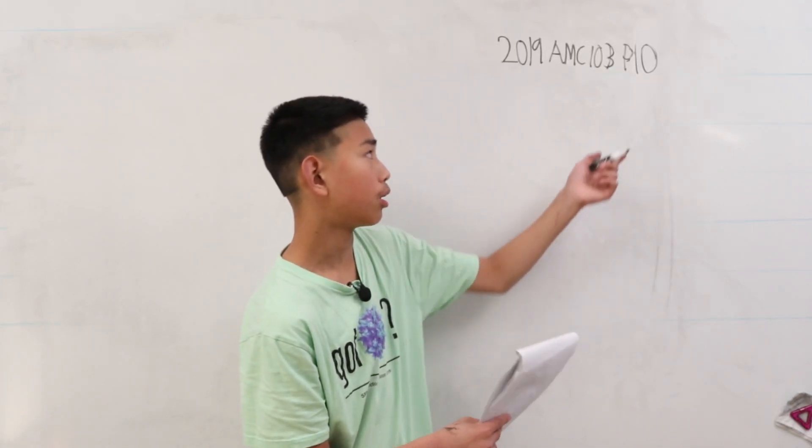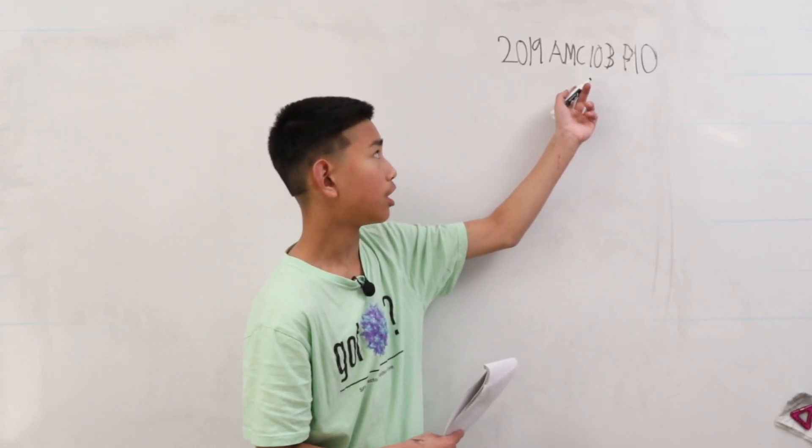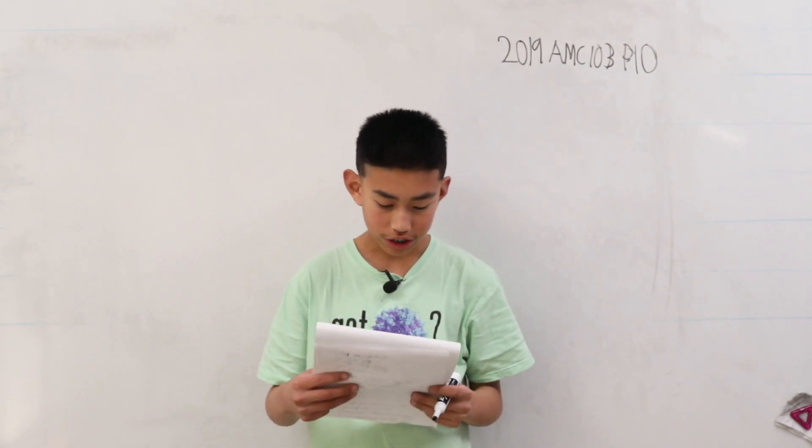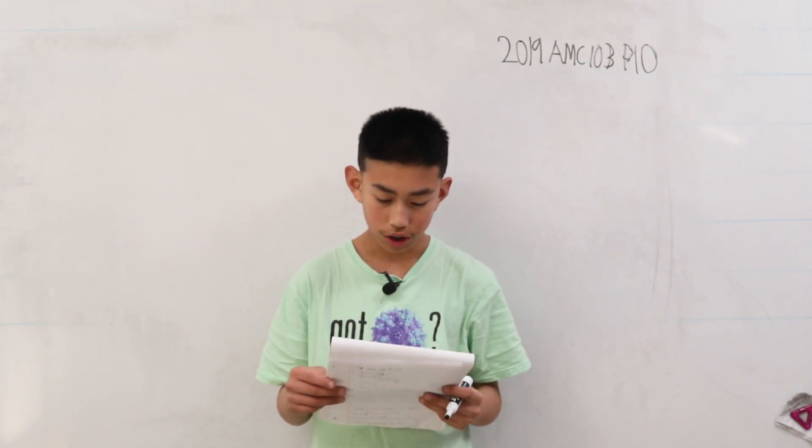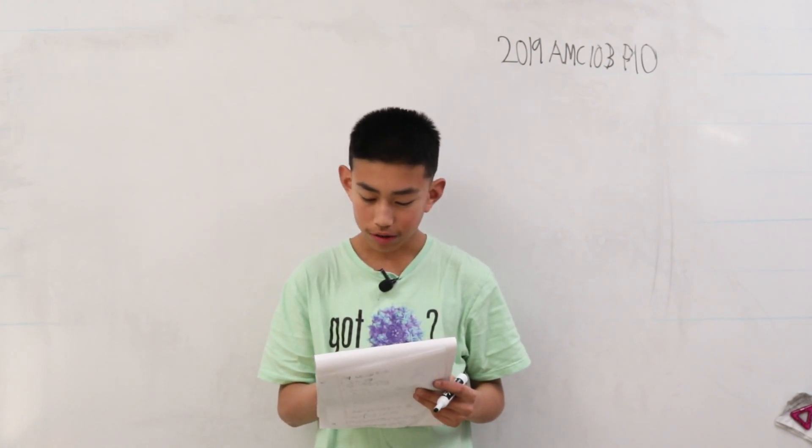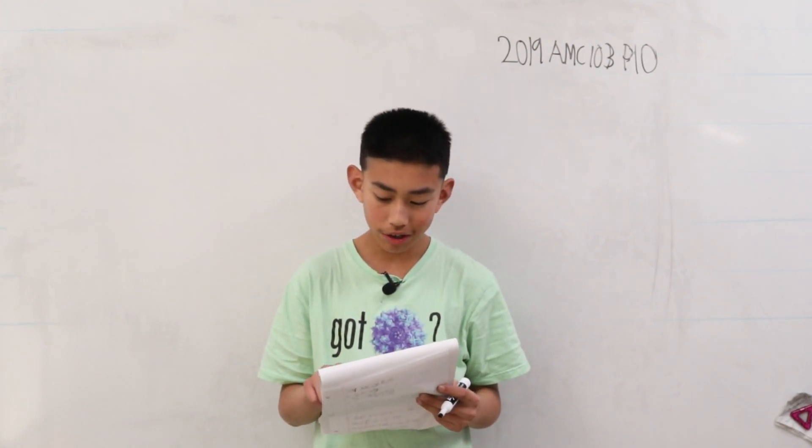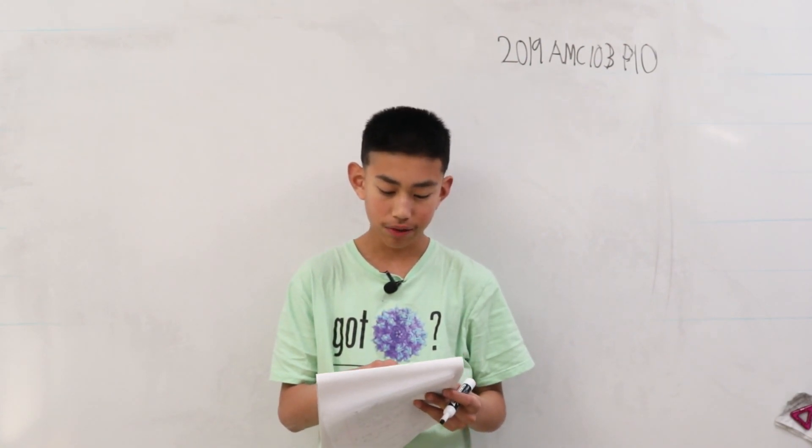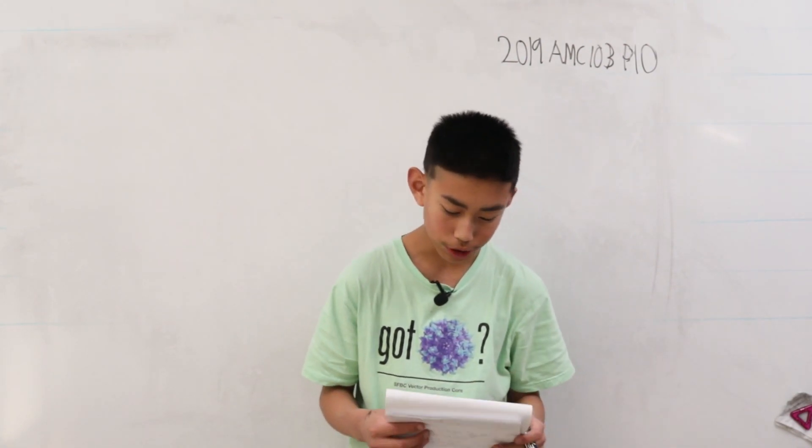We are now solving problem 10 from the MC10B from 2019. In a given plane, points A and B are 10 units apart. How many points C are there in the plane such that the perimeter of triangle ABC is 50 units and the area of triangle ABC is 100 square units?